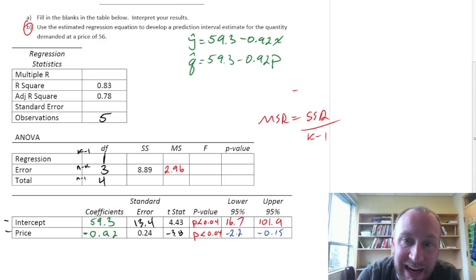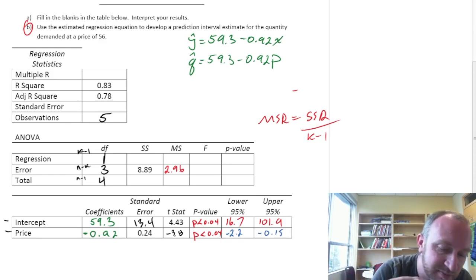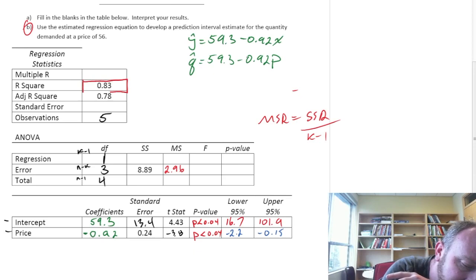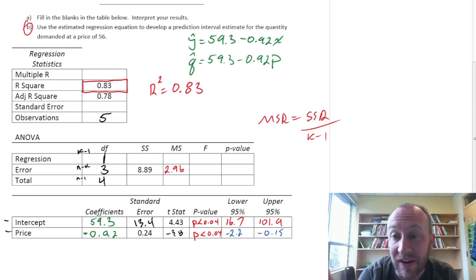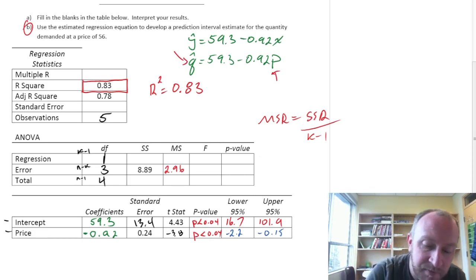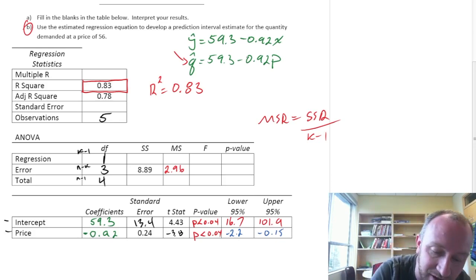But what we do have that relates these things together is we do have up here an R squared. And so that R squared is 0.83 and so what that means is this is a measure of goodness of fit. So this means that our regression explains 83% of the variation of our dependent variable. So price explains 83% of the variation of quantity. So that's a very strong fit. Now that's fine we should know what it means but we should also know how to use it in this case to fill in what's missing.